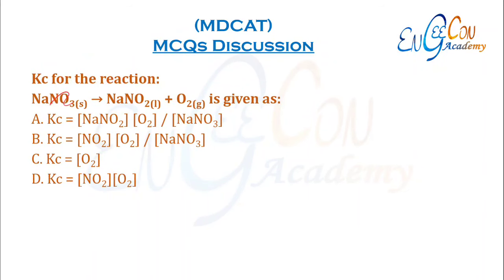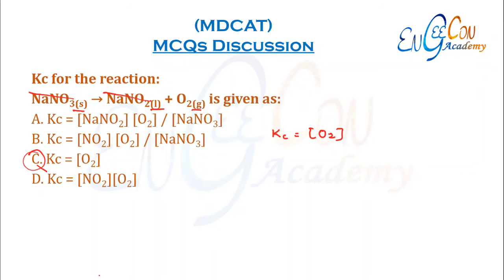Kc for the reaction NaNO3 (solid) → NaNO2 (liquid) + O2 (gas). In heterogeneous equilibrium, we omit liquids and solids and write only gases in the Kc expression. So Kc = [O2]. C is the correct option.